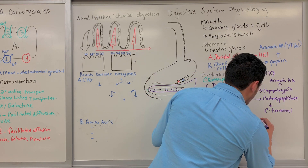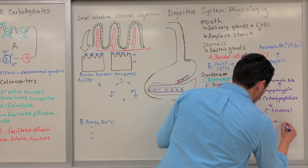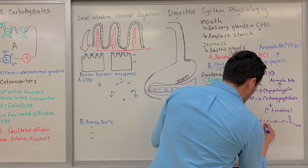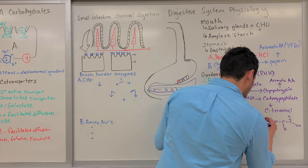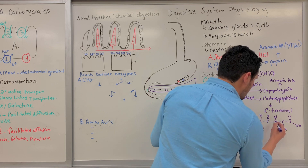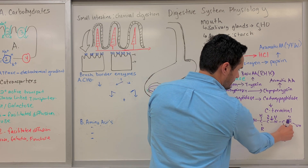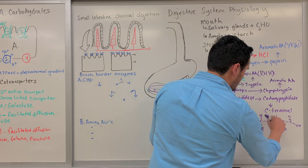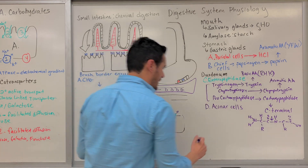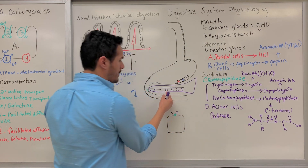Let me show you what the C-terminal is. For every peptide or protein, you have an N-terminal and a C-terminal. For a dipeptide, the N-terminal is here and the C-terminal is here, with R-groups on each side. Carboxypeptidase is going to cleave at the peptide bond at the C-terminal end. All three of these — trypsin, chymotrypsin, and carboxypeptidase — are all known as proteases, and the acinar cells are what secrete these proteases.